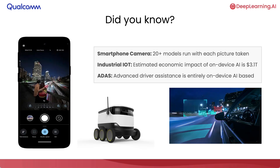Let's start with a few fun facts about on-device AI. Did you know that every time you take a picture with your smartphone, over 20 AI models run to capture the perfect picture within a few hundred milliseconds? In the industrial IoT segment, the estimated economic impact of on-device AI is about $3 trillion. And every time you drive a car that's equipped with advanced driver assistance, it's entirely based on on-device AI.